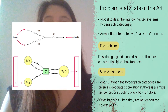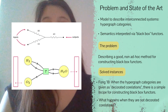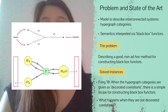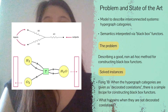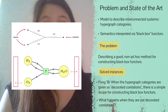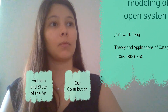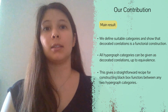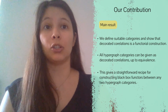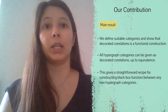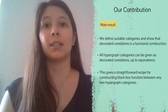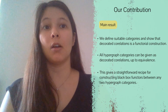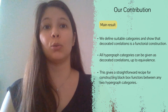Progress in this direction was made by Fong, who showed that if the hypergraph categories in question are given through a construction called decorated cospans, then there exists a simple recipe for constructing black box functors between them. The issue is what happens when the hypergraph categories we care about are not decorated cospans. Fong and I show that this is in fact never the case: we define suitable categories that allow us to assemble the decorated cospans construction into a functor, and having this we can prove that all hypergraph categories can be given as decorated cospans up to equivalence. This gives a straightforward recipe for constructing black box functors between any two given hypergraph categories.